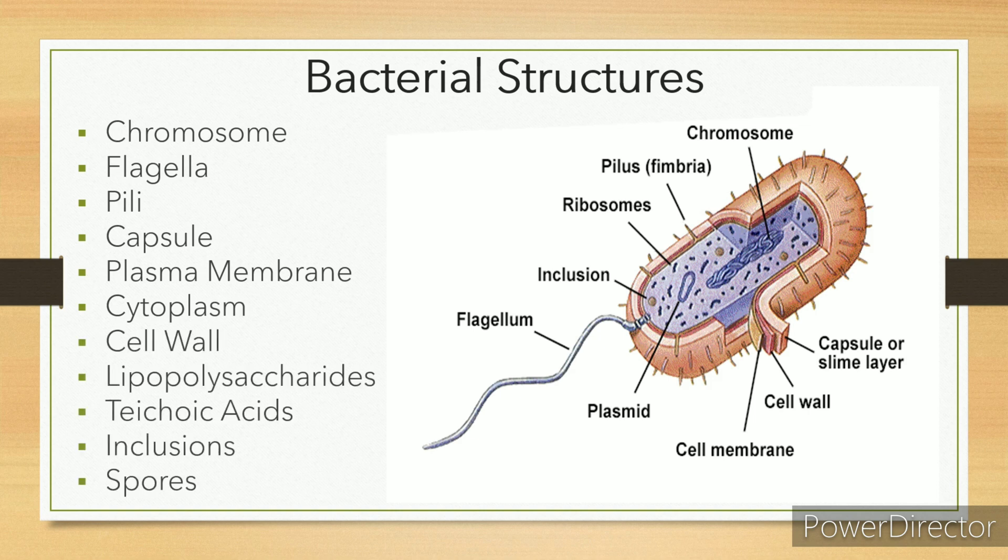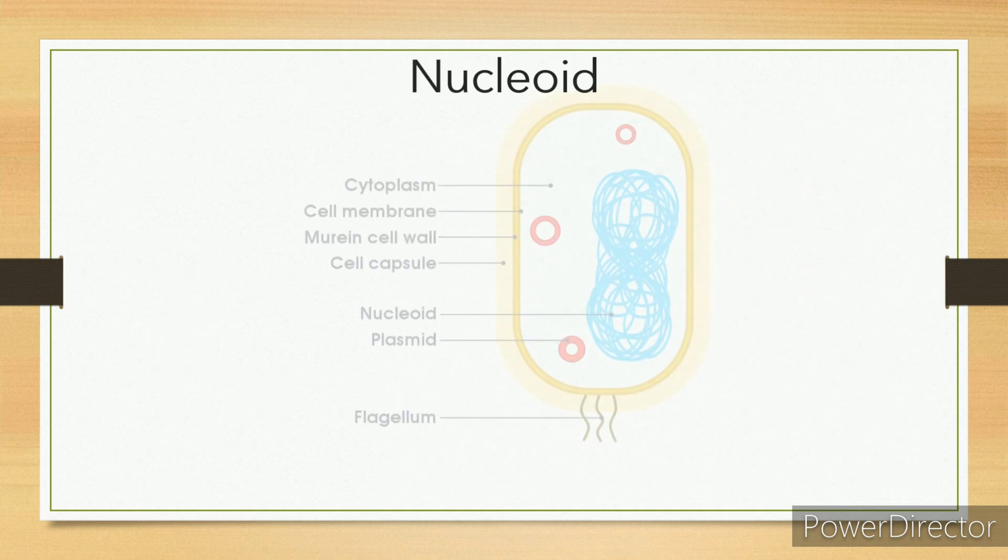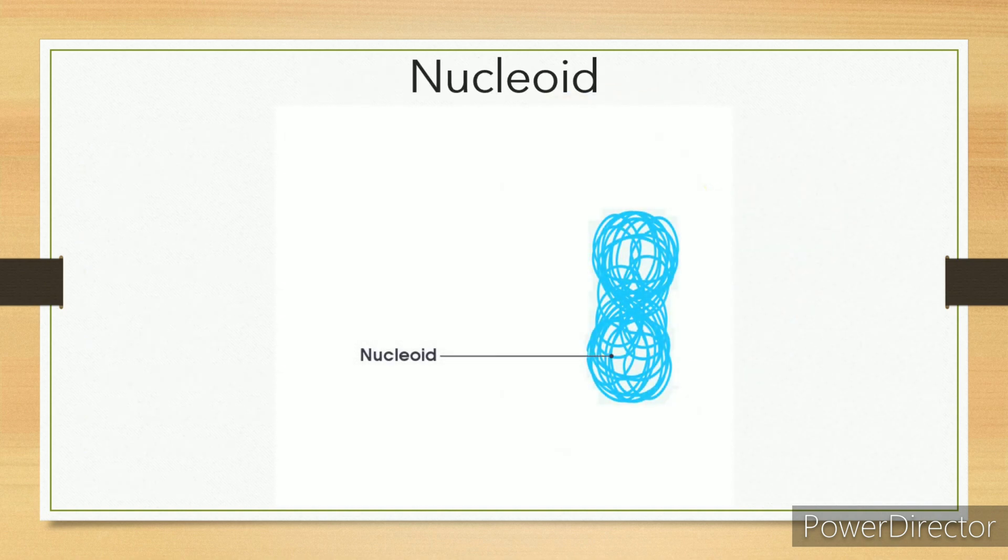Bacterial structures. Nucleoid: single long circular strand of DNA, no membrane around DNA. Nucleoid region is where the bacterial chromosome is located. A nucleoid is not an organelle, no association with histone proteins. All of the cell's genetic information for structure and function is located here.